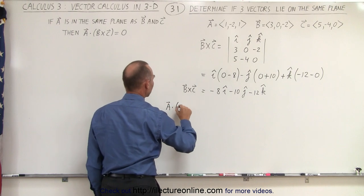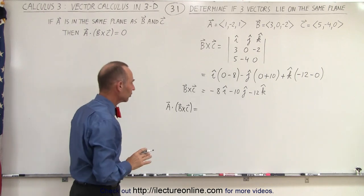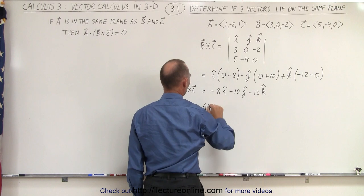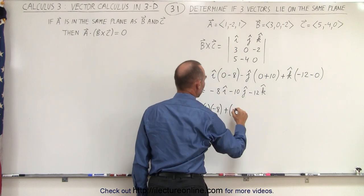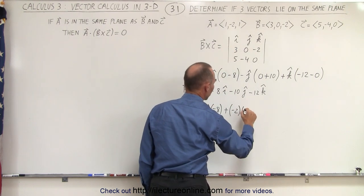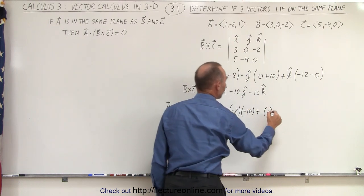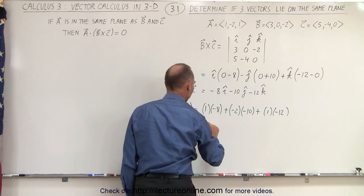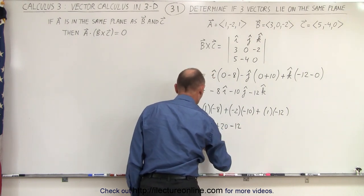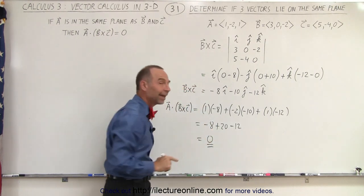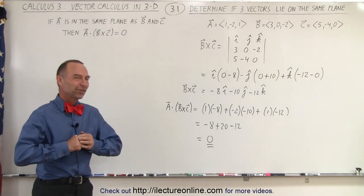So A dotted with B cross C will give us a scalar quantity. Let's see if that scalar quantity is equal to 0. So the first component of A times the first component of B cross C, plus the second component of A times the second component of B cross C, plus the third component of A times the third component of B cross C, and so this is equal to minus 8, that would be plus 20 and minus 12, and sure enough that equals 0. So therefore we can say that all three vectors lie in the same plane and that's how it's done.